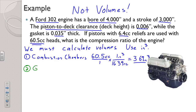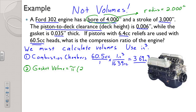So volume number two — our gasket volume — is going to be pi times our radius. The bore was 4.0, so our radius is 2 inches. We square it and multiply by our height, which is the thickness of the gasket: 0.035. You can type that into your calculator, and we get a pretty small volume: 0.44 cubic inches. That is our second volume.